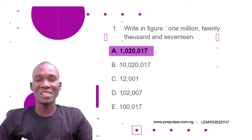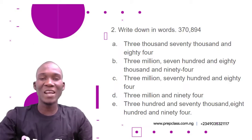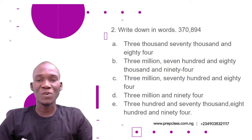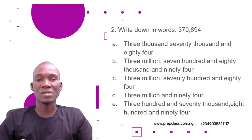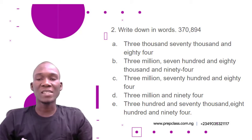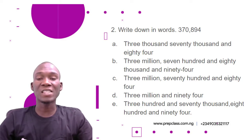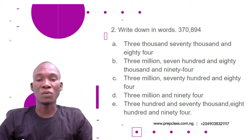Now let's move to the next question. Question number two: write down in words 370,894. The options are: A) three thousand seventy thousand and eighty-four; B) three million seven hundred and eighty thousand and ninety-four; C) three million seventy hundred and eighty-four; D) three million and ninety-four; E) three hundred and seventy thousand and ninety-four.